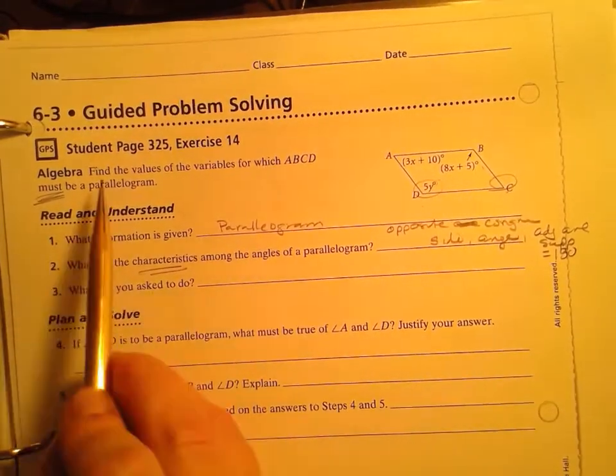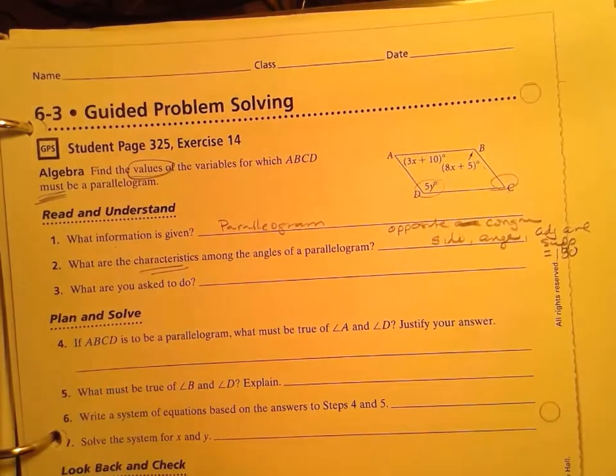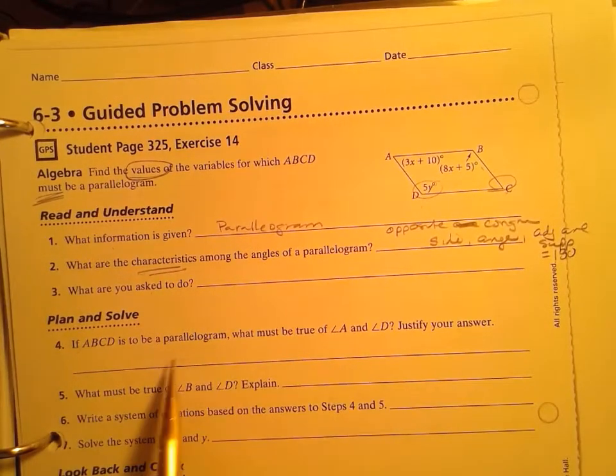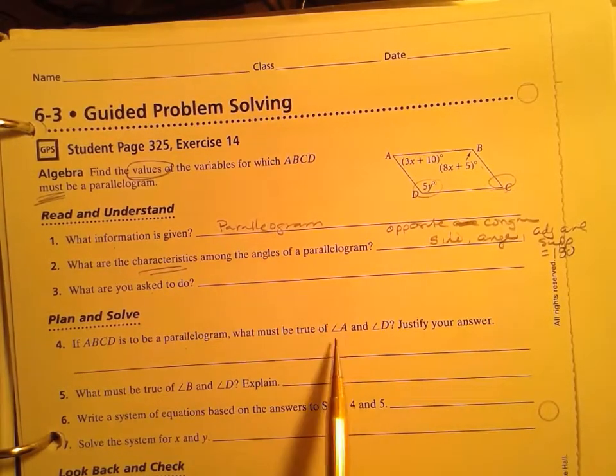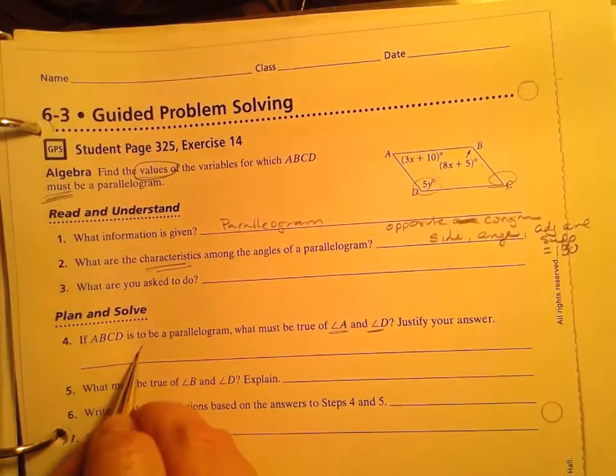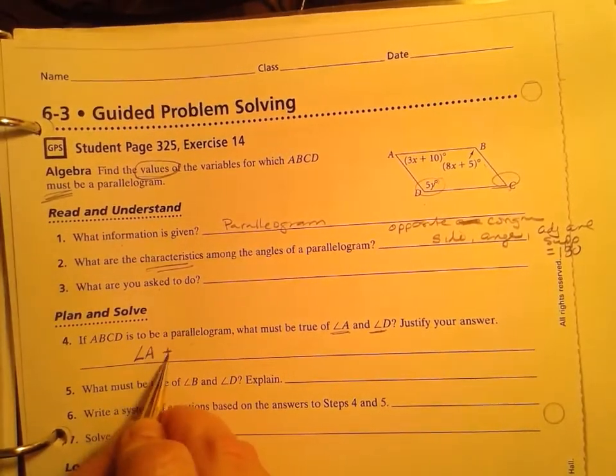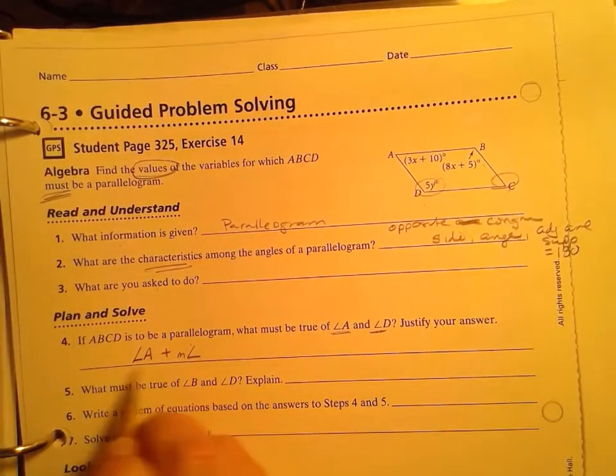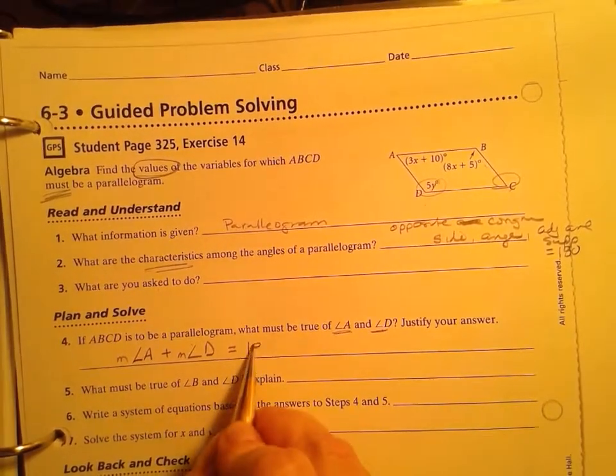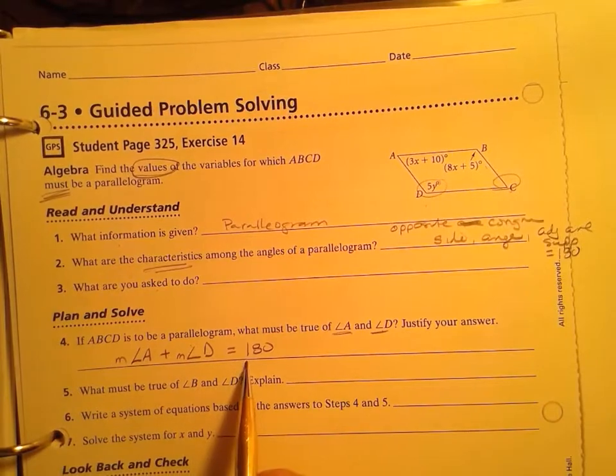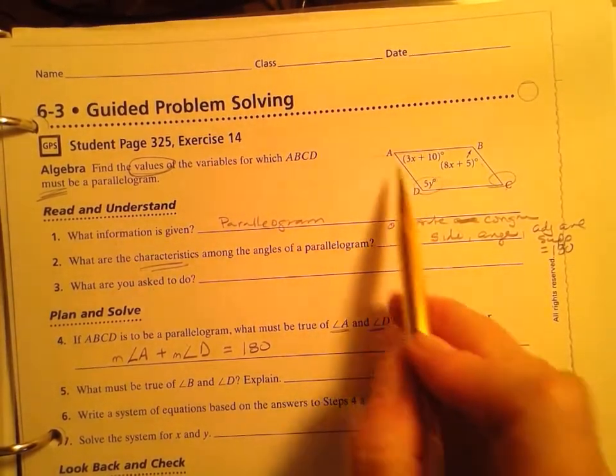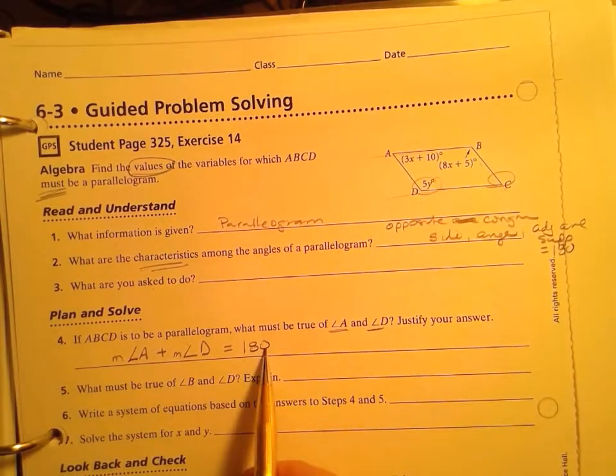What's it asking us to do? It's asking us to solve for the values. Okay, so for this to be a parallelogram, what has to be true about A and D? Angle A, the measures of the two angles equals 180, because if it's a parallelogram, that's a transverse crossing two parallel lines and they are supplementary.